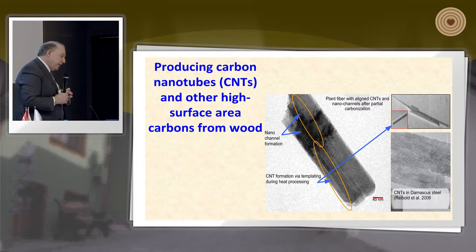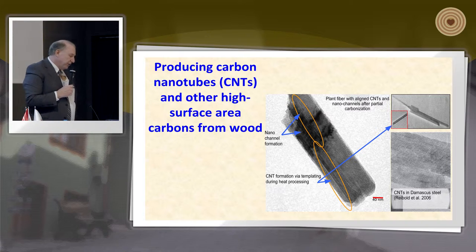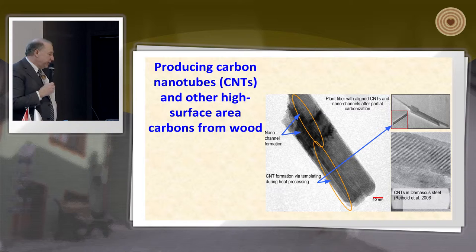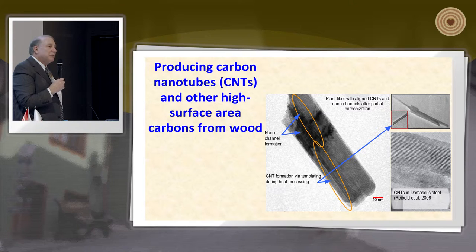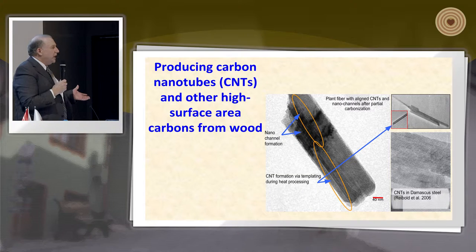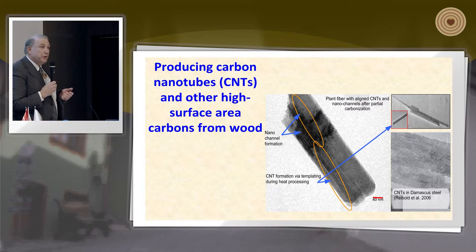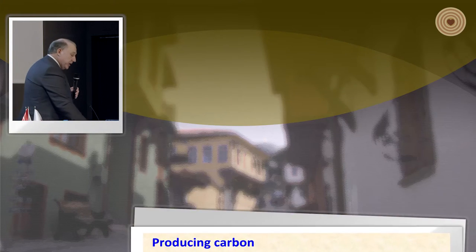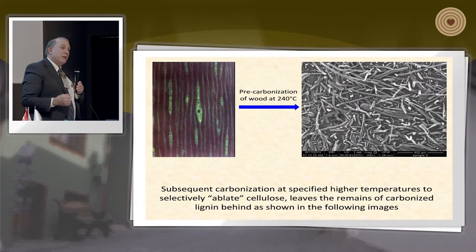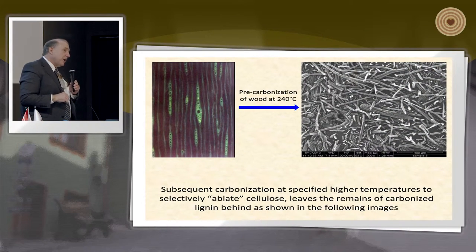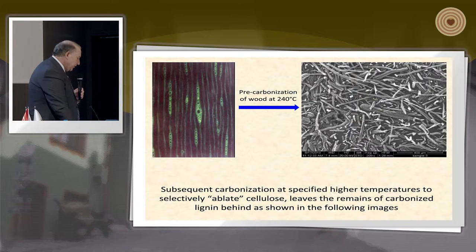Jumping to another area: the production of carbon-type materials. We've been able to produce carbon nanotubes (CNTs) and other types of high surface area carbon. Why produce carbon from wood? If you make a very high surface area carbon, it's an excellent material for energy storage or fuel cells. In the future, if we need batteries or supercapacitors, we may be able to make them out of wood through specialized carbonization processes.